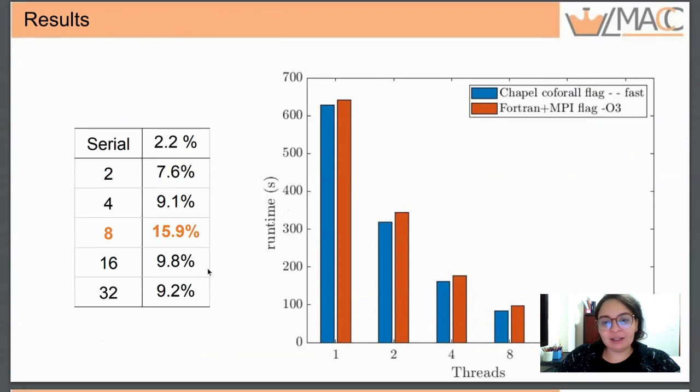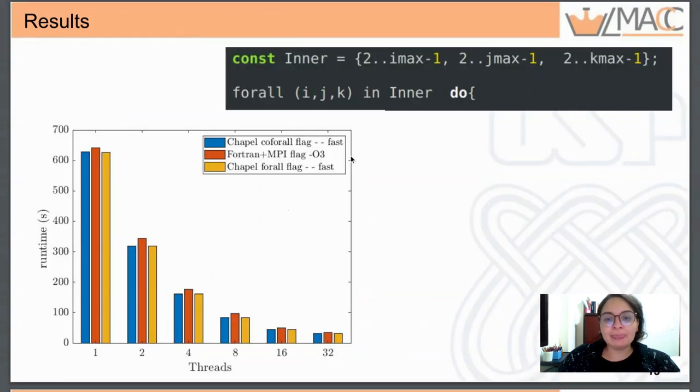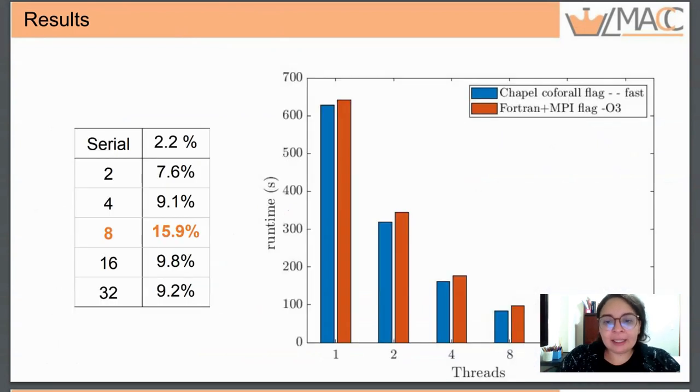Regarding the performance, the serial version of Chapel is two percent faster than the Fortran version, and Chapel was up to fifteen percent faster than the Fortran MPI version using eight threads.